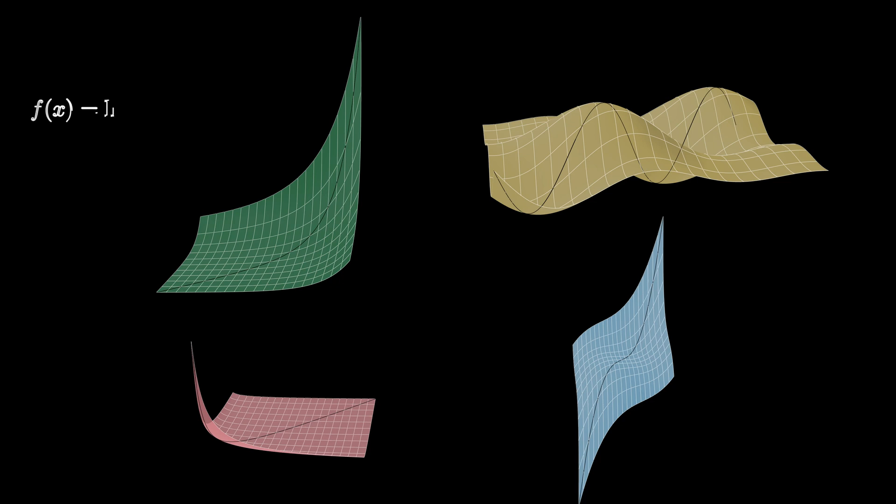Now it's your turn, if you happen to know a little bit of calculus already. Let's look at those four surface plots we started the video with — each is an average rate of change for a particular function. Can you look at the associated curve of discontinuities and guess which function was used to generate each surface plot? Here's a hint: the four functions used were f of x equals the natural log of x, f of x equals cosine of x, f of x equals e to the x, and f of x equals x to the fourth. Can you match these four functions with the appropriate average value surface plot?